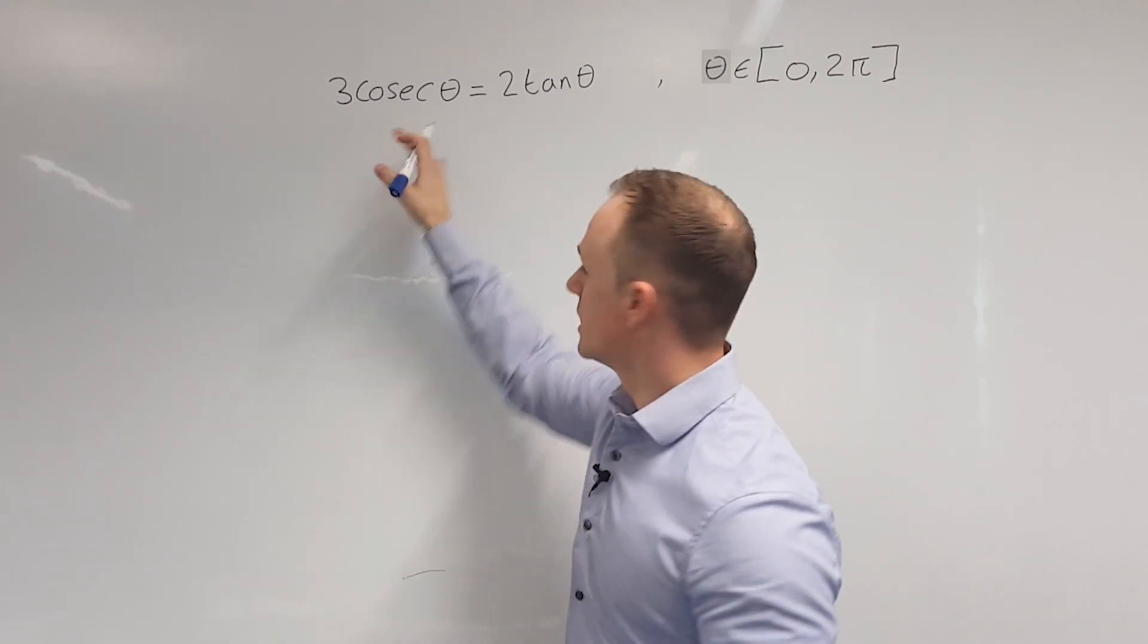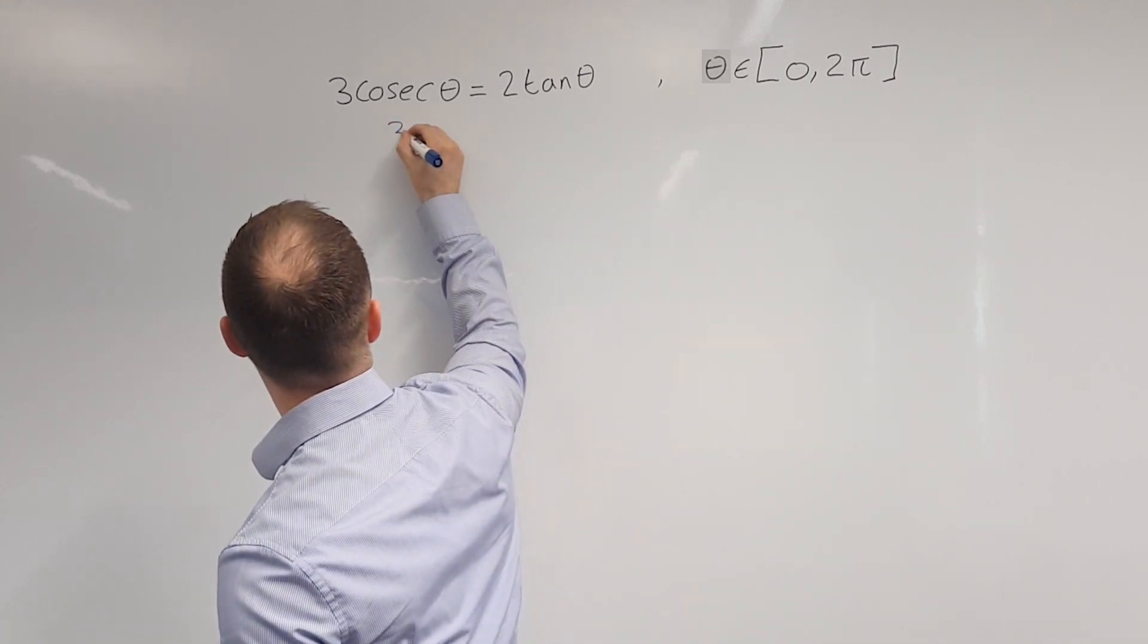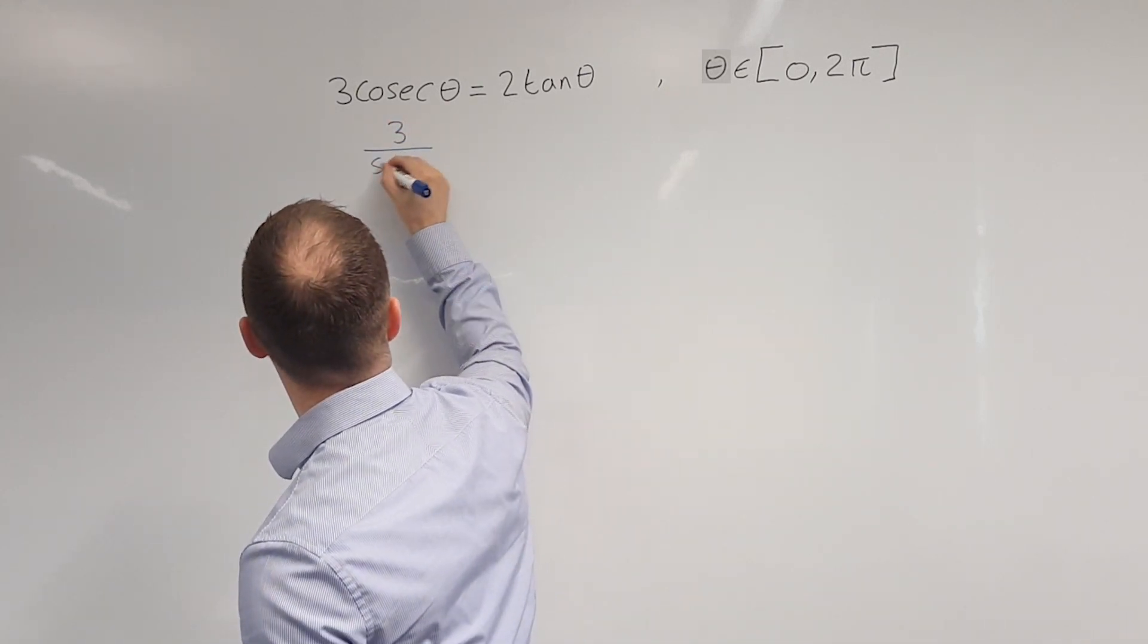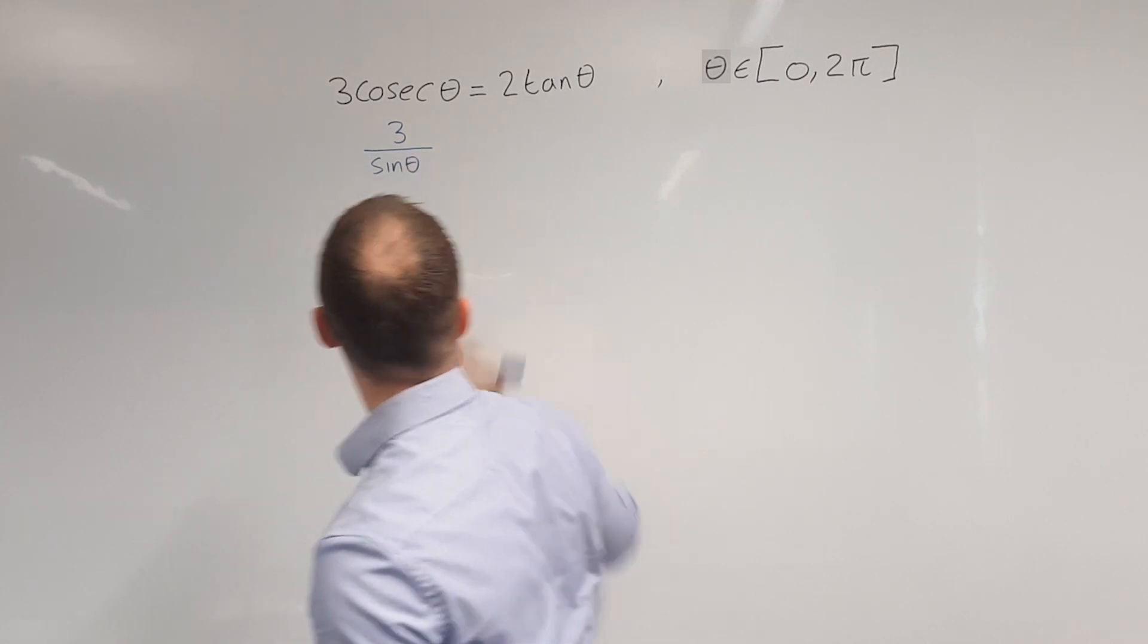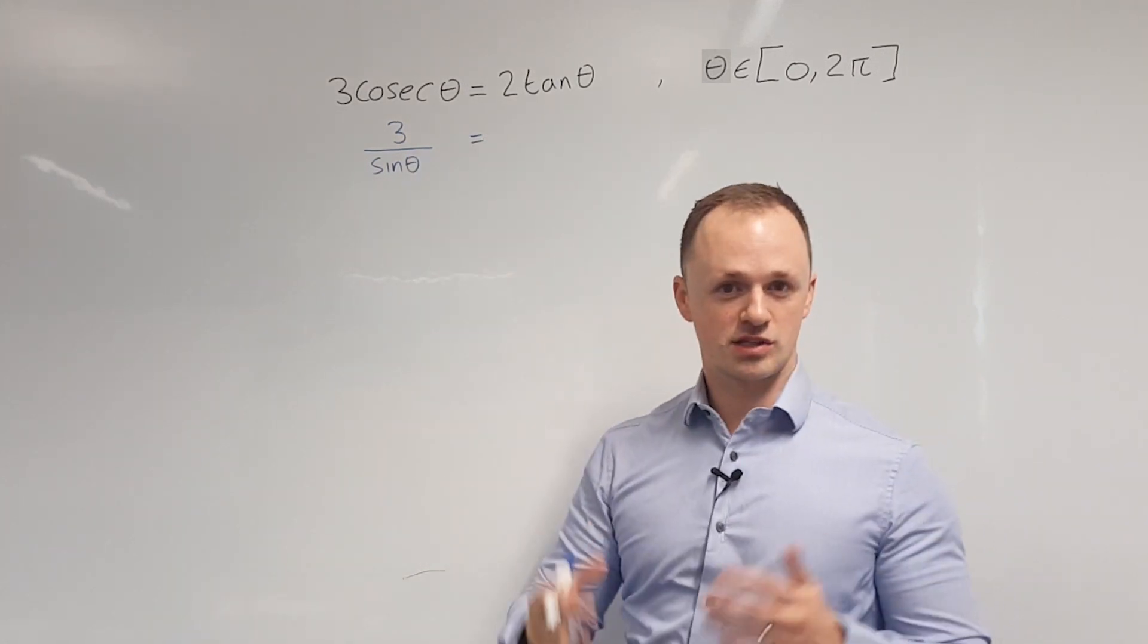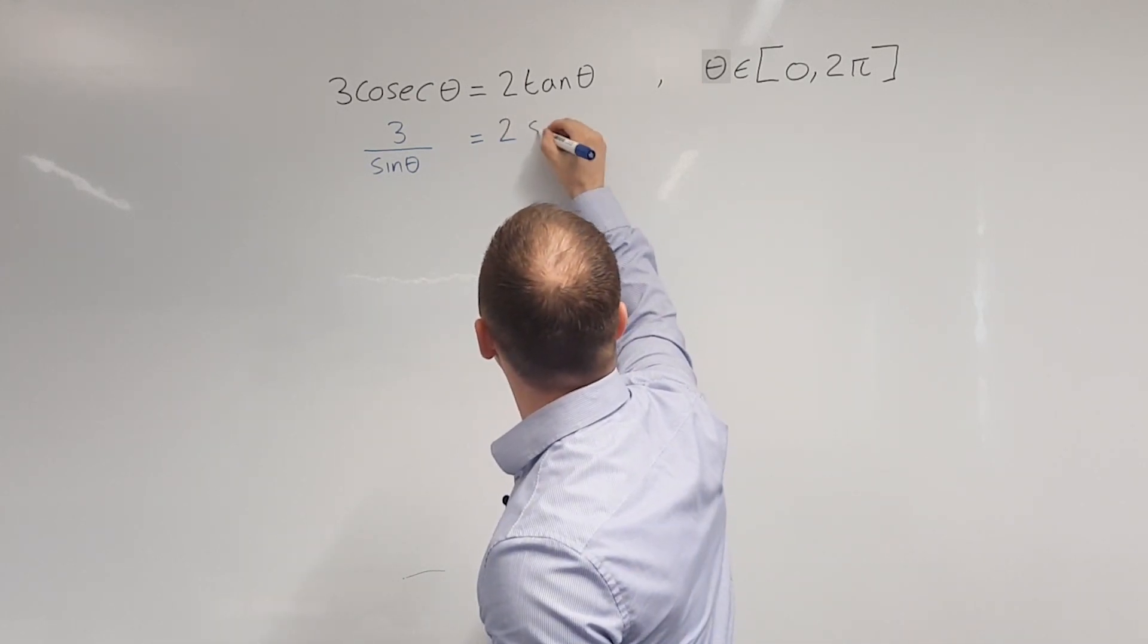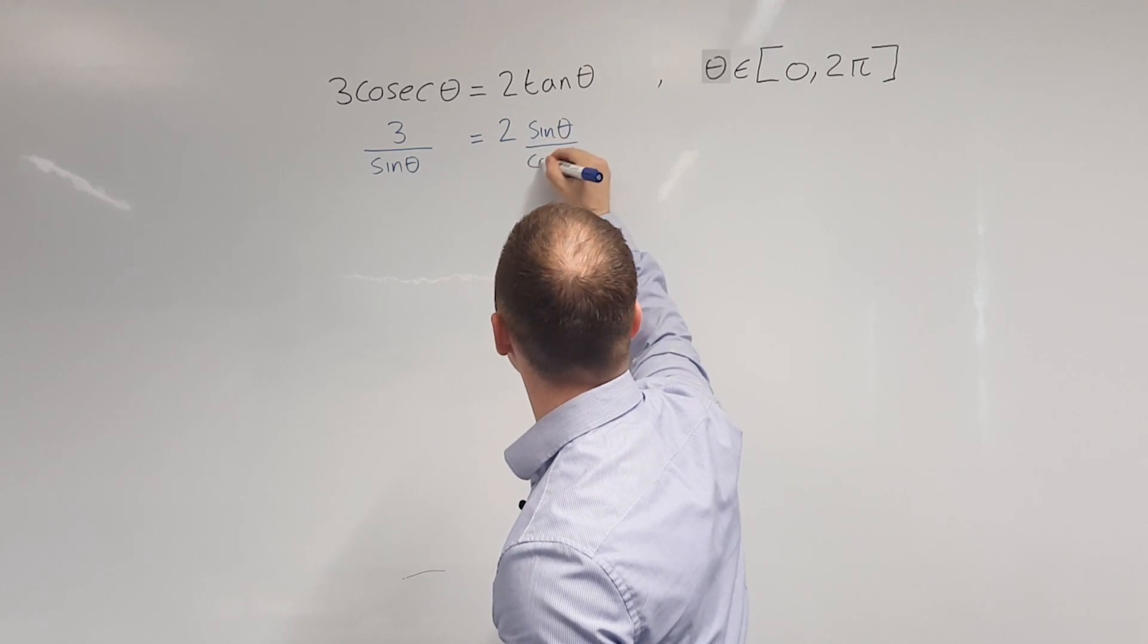So cosec theta is 1 over sine theta. So I can write this left-hand side as 3 over sine theta. On the right-hand side, tan theta can be written as sine over cos, so we can write that as 2 sine theta over cos theta.